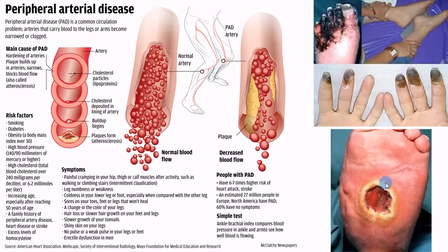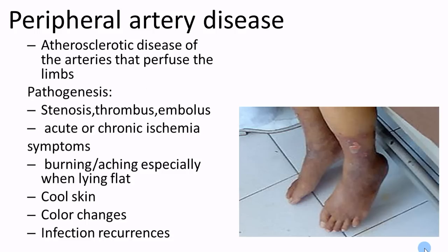People with peripheral artery disease have six to seven times higher risk of heart attack and stroke. You can also see ulcers and gangrene form. Peripheral artery disease is an atherosclerotic disease — decreased circulation due to atherosclerosis. The pathogenesis begins with stenosis, a narrowing of the blood vessel diameter. High pressure trying to blast through creates a rough area, forming a thrombus. If it gets worse, an embolus can lodge there. You can have acute ischemia from an embolus — rapid onset — or chronic ischemia from slow, gradual stenosis or thrombus accumulation.